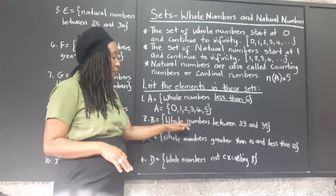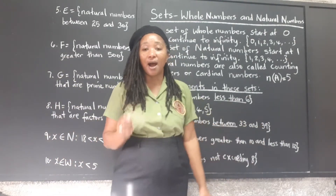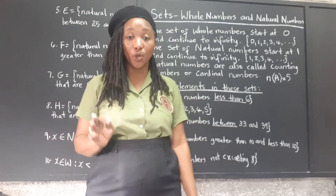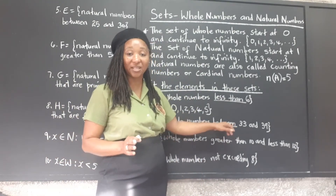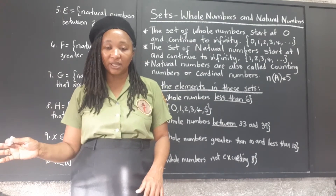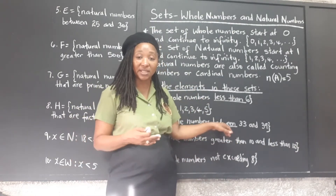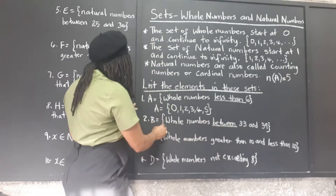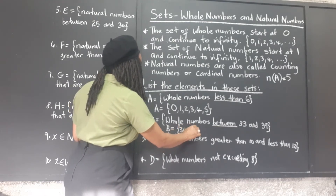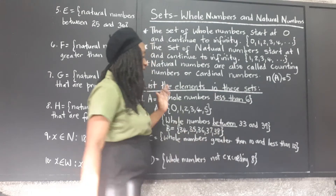Set B: whole numbers between 33 and 39. We are not going to include 33 or 39 because we only want those that fall between them — unless the problem said 'inclusive,' which would be a special condition. So the elements are: 34, 35, 36, 37, and 38. These are the whole numbers that fall between 33 and 39.